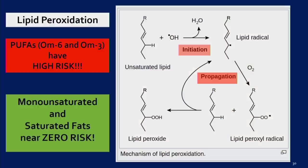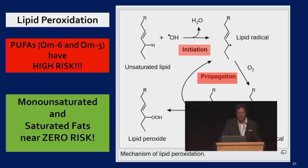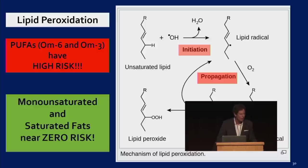Let's look inside the cell at the electron transport chain, where around 89% of our energy is produced. To understand what goes wrong in the mitochondria, we need to understand lipid peroxidation. When we consume lipids, two things can happen: they accumulate in cells and can undergo peroxidation — being oxidized and damaged — or they can be burned for fuel via beta-oxidation. PUFAs — omega-6 and omega-3 — are at very high risk of oxidizing because of their double bonds. Monounsaturated and saturated fats have almost zero risk of peroxidation.